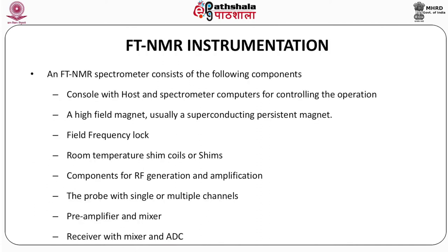FTNMR Instrumentation. An FTNMR spectrometer consists of the following components: a console with host and spectrometer computers for controlling the operation; a high field magnet, usually a superconducting persistent magnet; field frequency lock; room temperature shim coils or shims; components for RF generation and amplification; the probe with single or multiple channels — multiple channel means different channels tuned to different nuclei with different gyromagnetic ratios; pre-amplifier and mixer; and a receiver with mixer and analog to digital converter.